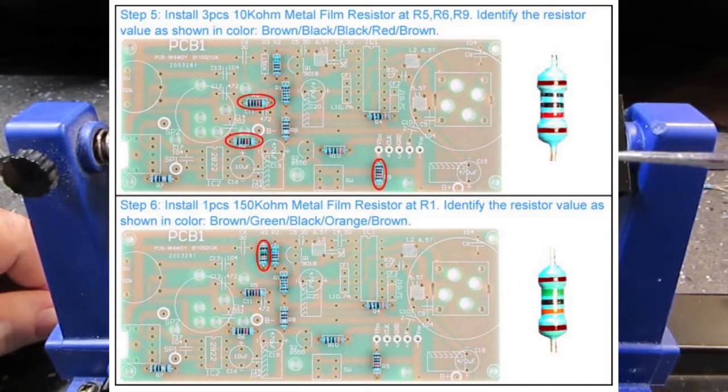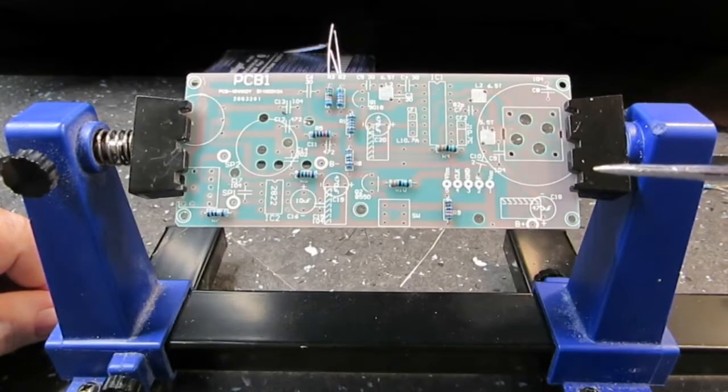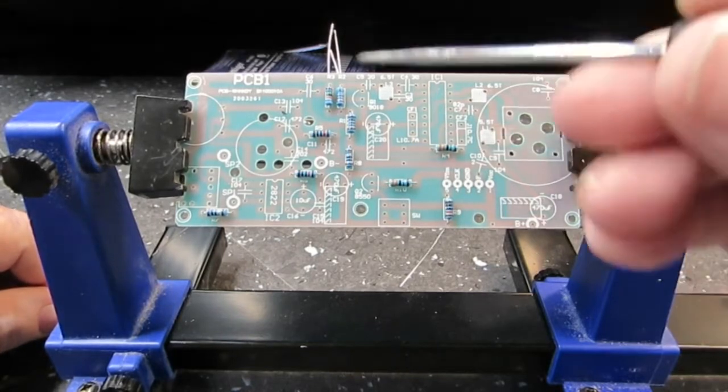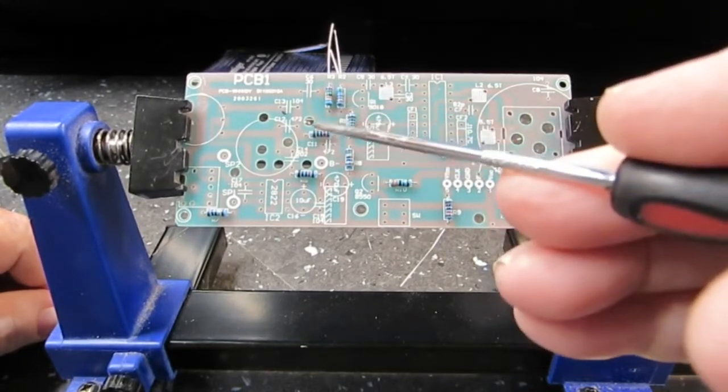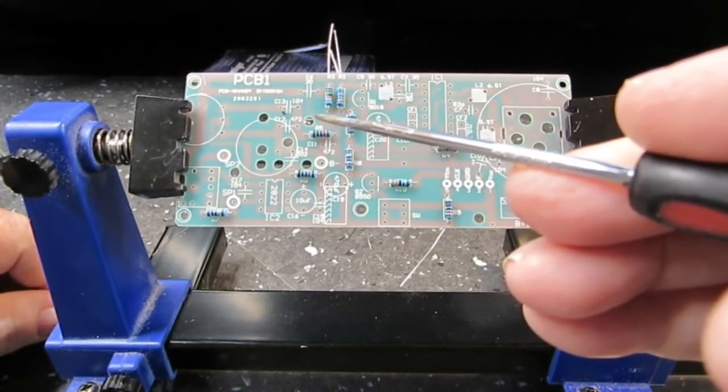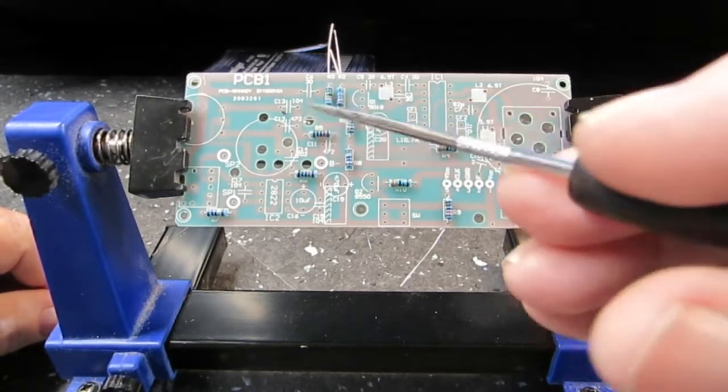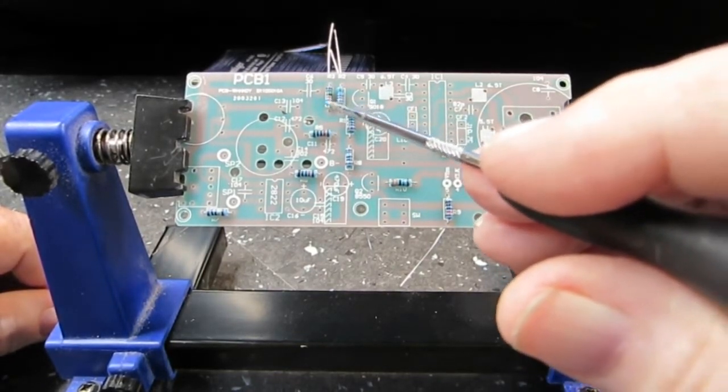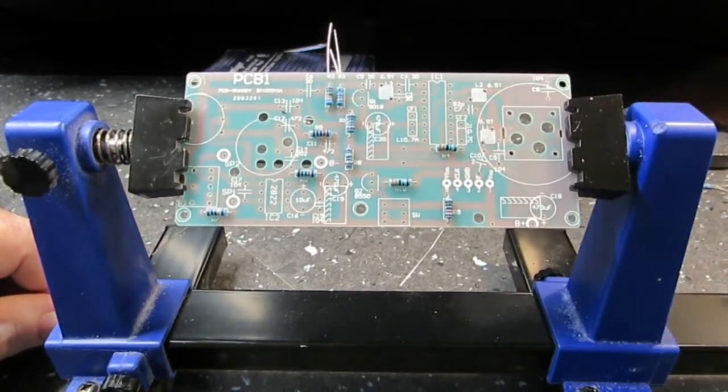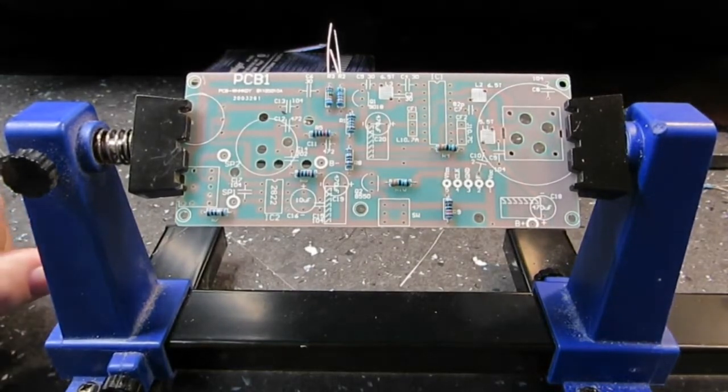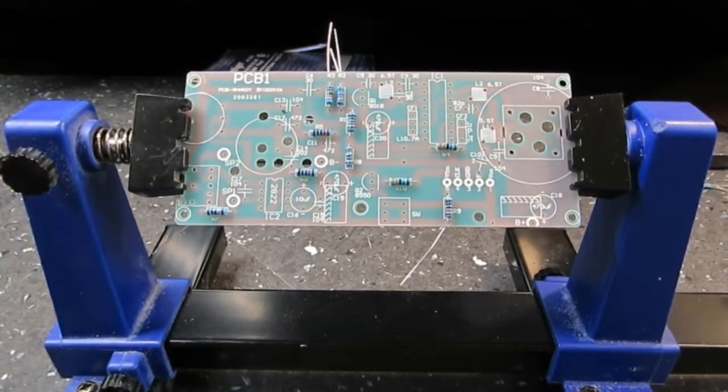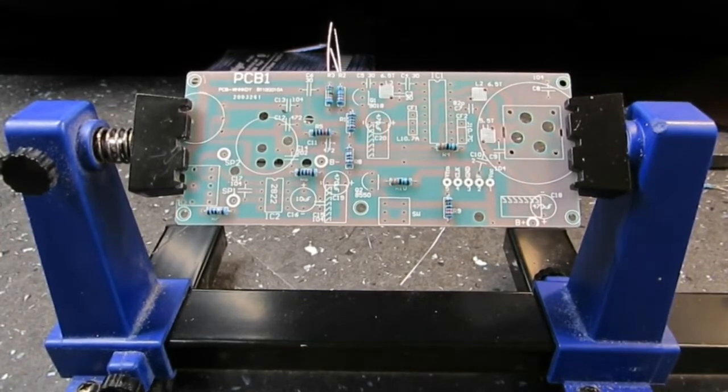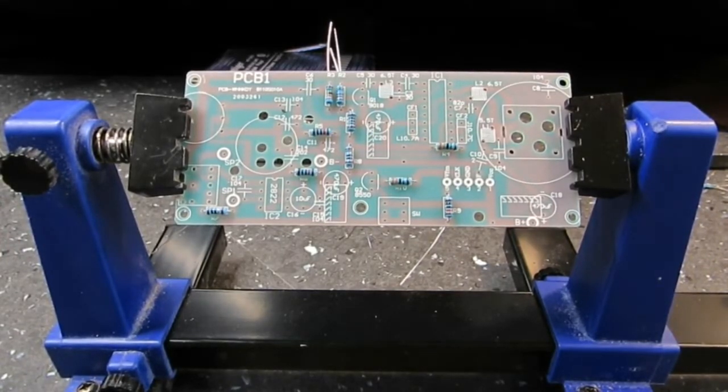150K ohm metal film resistor. This is step 6. At R1. No, that couldn't be R1. We've already put R1 in. Oh, that's not going to work. 150K at R1. That's what it says. But that is not R1. At R3. Okay, that's a miss print on the instructions, obviously. Because this is marked what it's supposed to be. 150K underneath that. And it is R3.